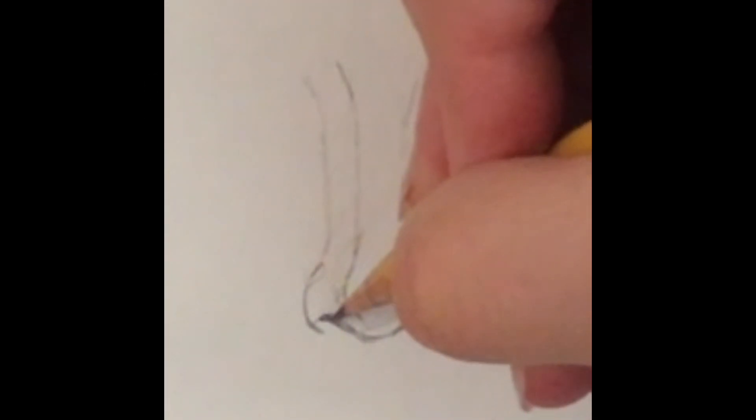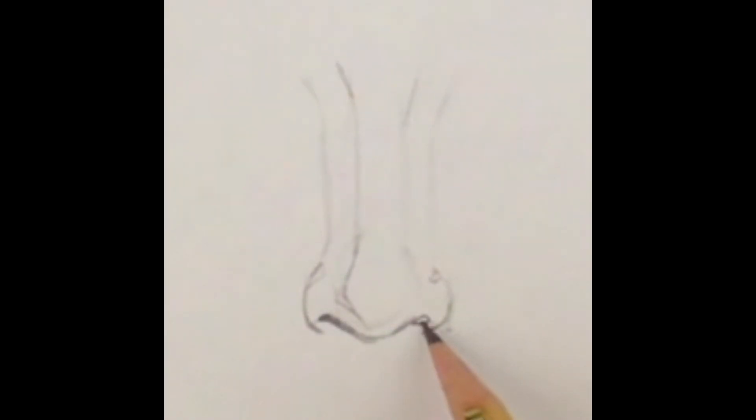Again, the darkest dark is the triangle for the nose right here. After I finish doing that, I'm going to start to shade the ridge of the nose and that will help kind of make it pop.